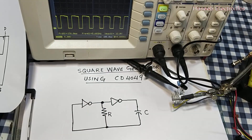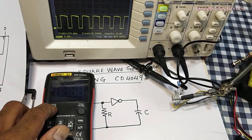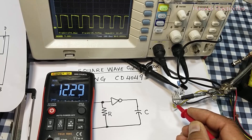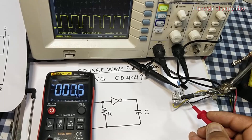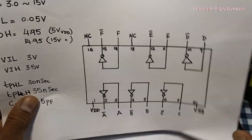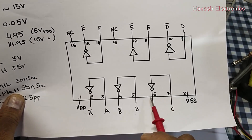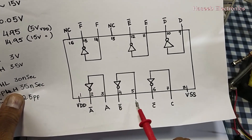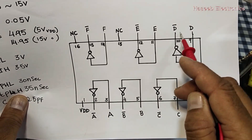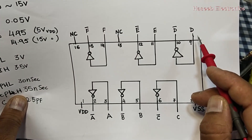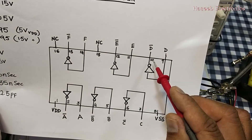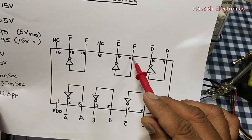Pin number one is VDD and pin number eight is VSS. I connected 12.3 volts at pin number one and pin number eight is ground. We can use any two gates — pin 7, 6, 5, 4 for gates B and A. Now I am using the two gates at pins 9, 10, 11, and 12. Pin 9 is input, pin 10 is output, pin 11 is input, and pin 12 is output.